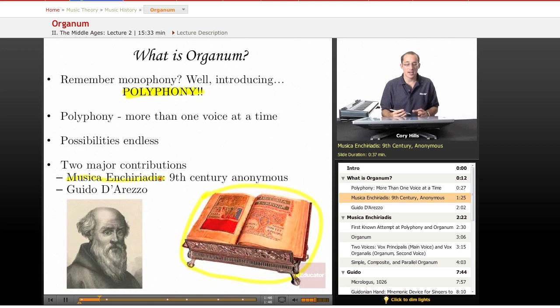So, Musica Enchiriadis, we don't know who wrote it, but it's a big book about lots of things, actually, and music is only, you know, the development of polyphony, I should say, is only a small facet of it. But we'll talk about why in a little bit.